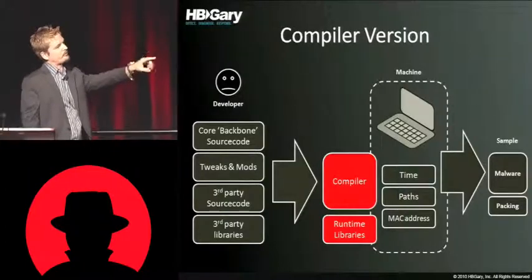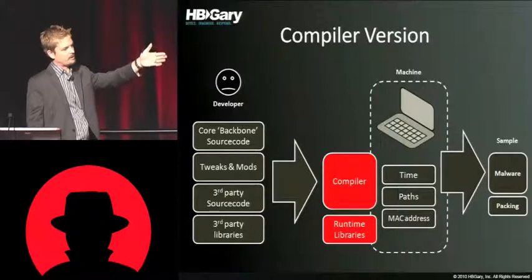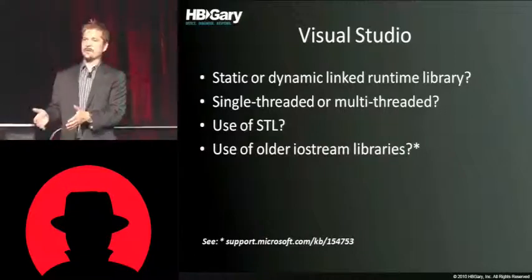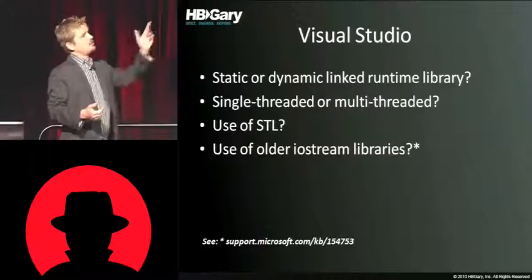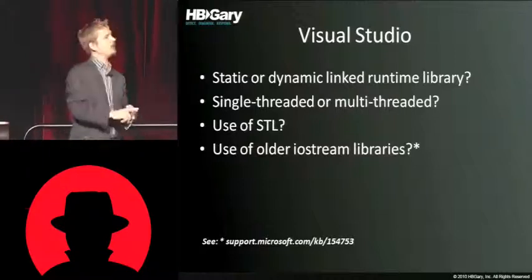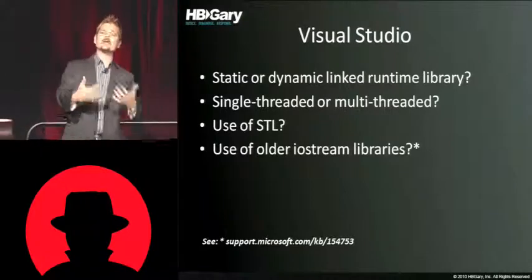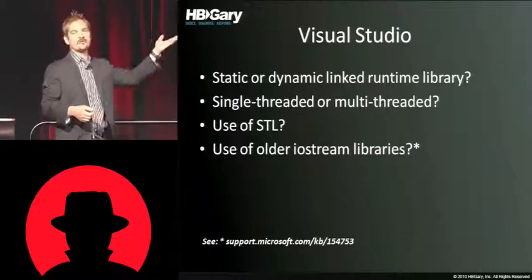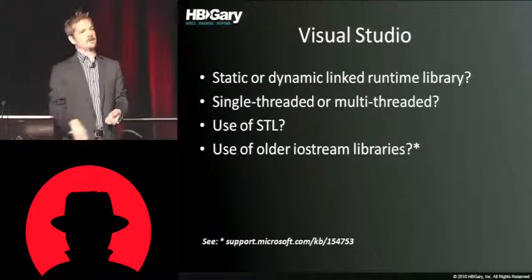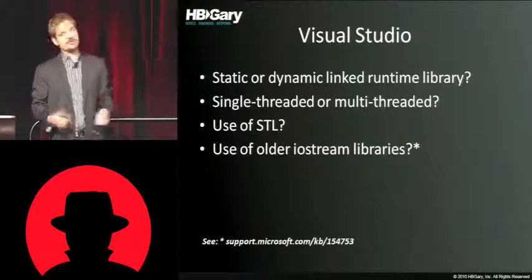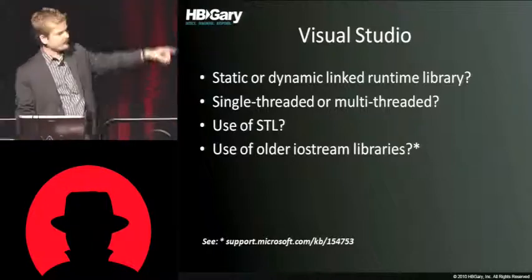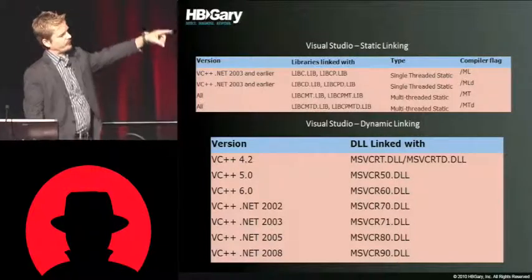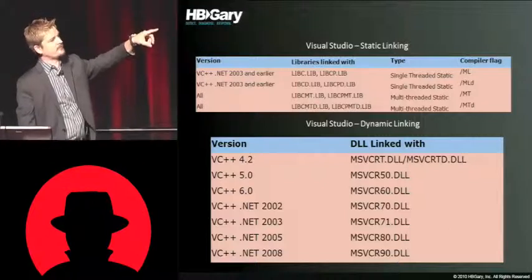I spent quite a lot of time doing compiler version checking and runtime library version checking — that'll all be in the fingerprint tool. You can determine that multiple samples were compiled off the same version of Dev Studio or Borland Delphi. You can check whether the developer is using static or dynamic linking of C runtime libraries, and whether he's using single-threaded or multi-threaded model. Does he use the Standard Template Library? I've got a couple of guys we're tracking who really like STL, and others who don't. Whether they use new or old versions of stream libraries. The cheat chart shows different versions of Visual Studio related to which Visual C runtime they're using.